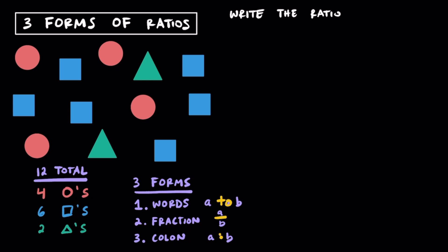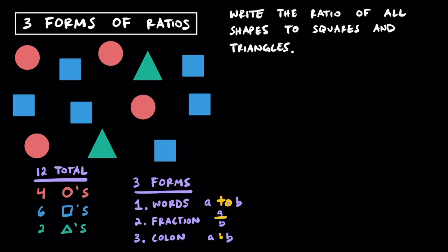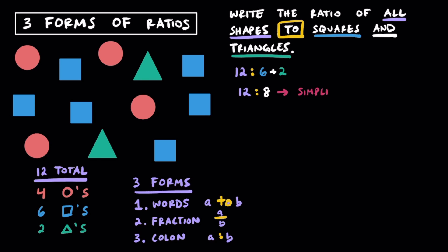Here's one more example — pay attention to the words before and after the word 'to'. We're writing the ratio of all shapes to squares and triangles. All shapes comes before 'to' and equals 12. Squares is 6 and triangles is 2, giving us 12 to 8. Dividing both by their GCF of 4, we get 3 to 2 — our ratio of all shapes to squares and triangles. Writing it as a colon, a fraction bar, and using words, the ratio is 3 to 2.